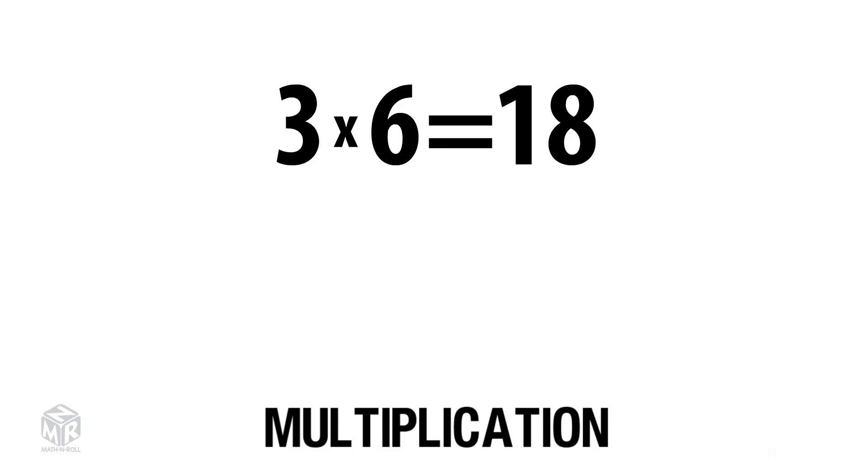Let's take a look at a multiplication sentence. 3 times 6 equals 18. There are three parts to a multiplication sentence: factor, factor, and product.